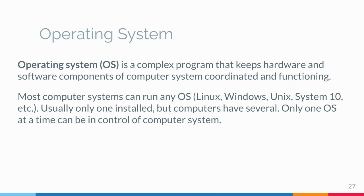Most computer systems can potentially run any of several operating systems. For example, most Intel-based computers can run either Linux or Windows. Usually only one operating system is installed on a computer system, although some computers have several. In any case, only one operating system at a time can be in control. The computer user makes a choice when the computer is turned on, and that operating system remains in control until the computer is turned off.